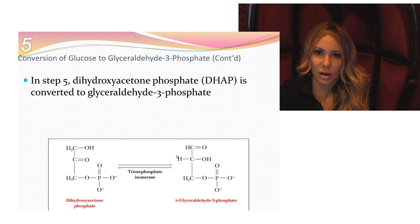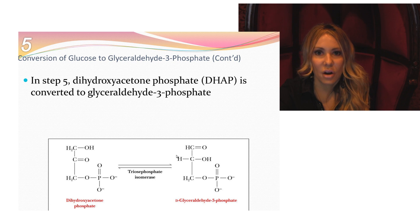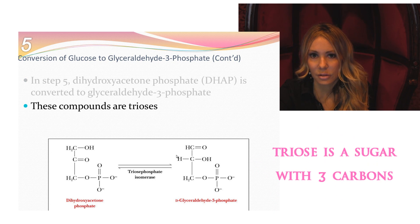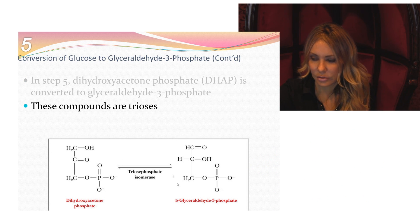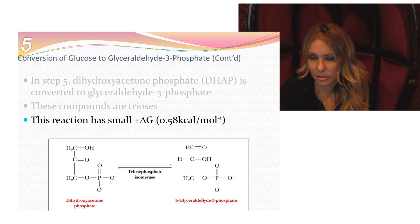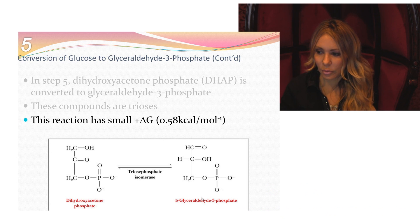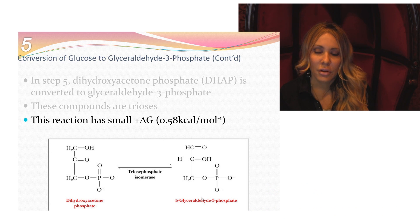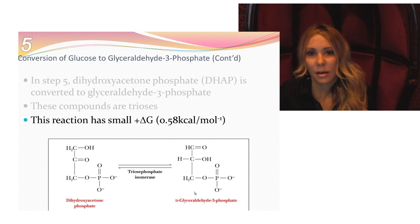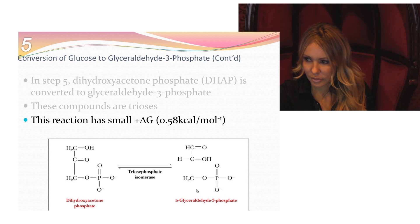This conversion is catalyzed by triose phosphate isomerase — it is an isomerization and it is not regulated. Both compounds are trioses, but we're going from a ketose sugar to an aldose sugar. This reaction has a small positive delta G of 0.58 kcal/mol, but utilization of the product being pulled by future reactions will overcome this very small delta G.